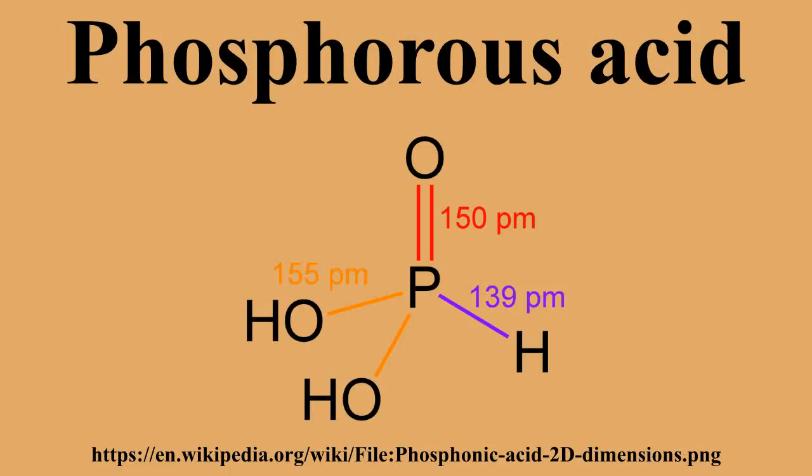Phosphorus acid is the compound described by the formula H3PO3. This acid is diprotic, not triprotic as might be suggested by this formula. Phosphorus acid is an intermediate in the preparation of other phosphorous compounds.